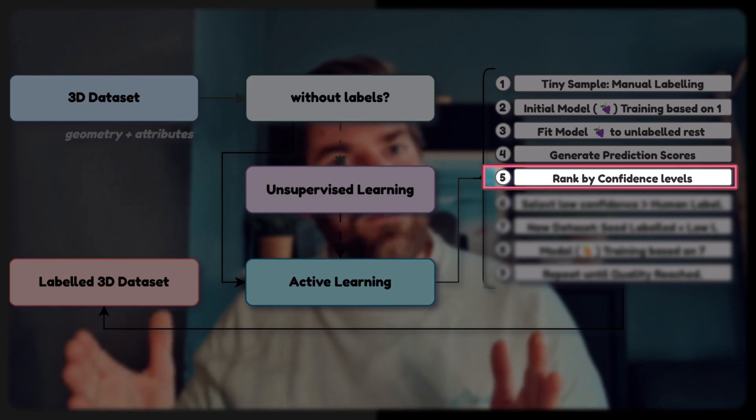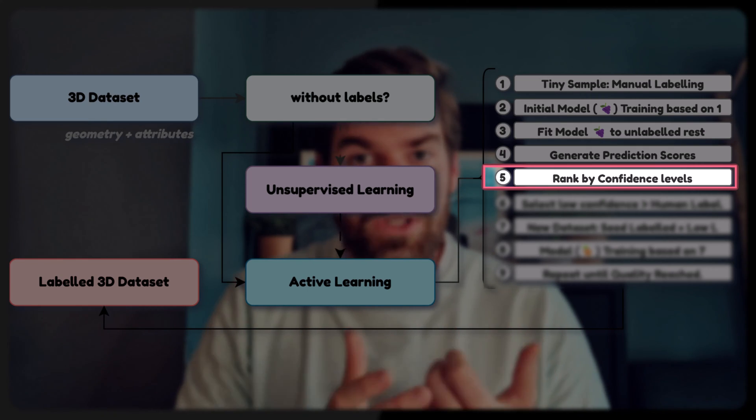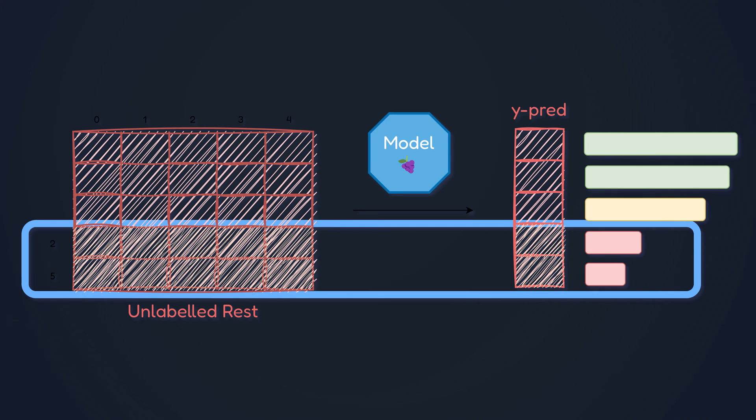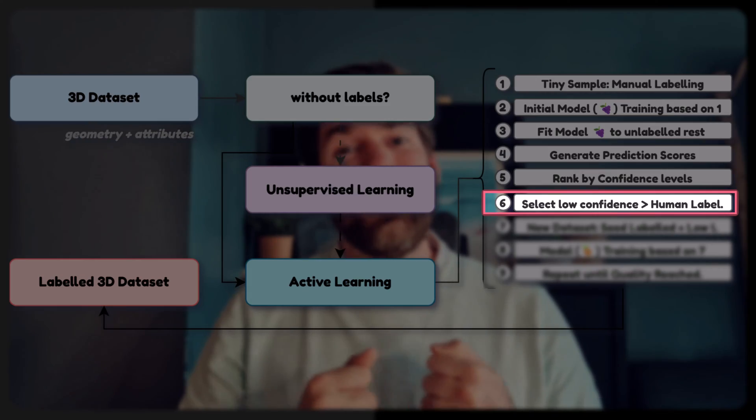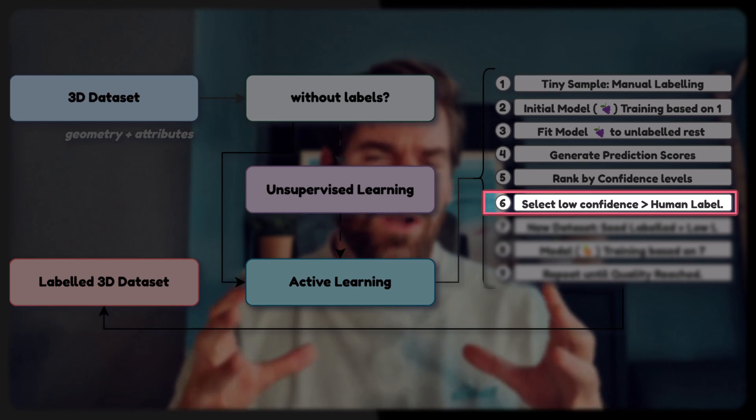In step five, we rank predictions by confidence level — highest confidence at the top, lowest at the bottom. Step six is where it gets interesting: we select the low-confidence predictions, where the model was really not pertinent, and pass those to human labelers. Maybe not all of them on the first pass, but some — and we ask the human to label those.